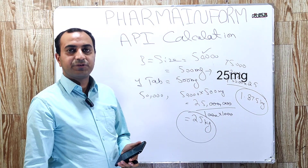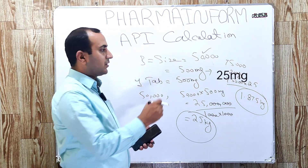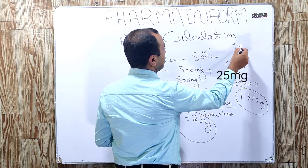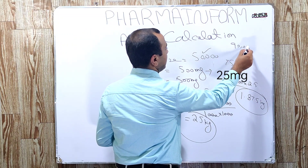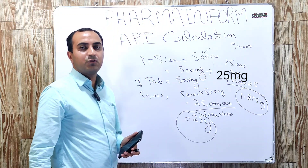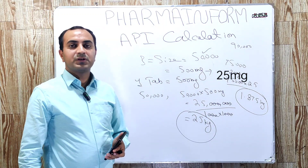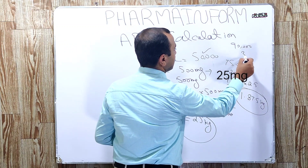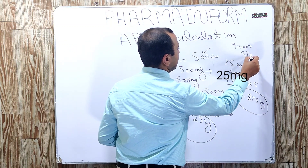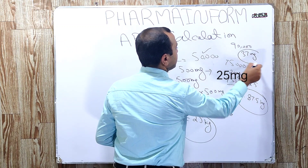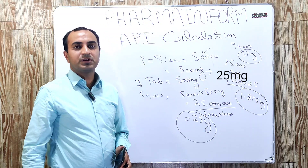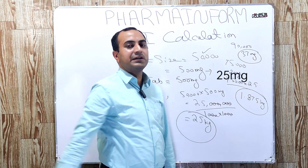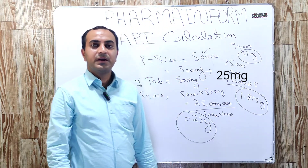Solve the question and give the answer in the comment box. If we want to prepare 90,000 tablets and the amount of active pharmaceutical ingredient in each tablet is 37 mg, how much quantity of active pharmaceutical ingredient will be required to manufacture 90,000 tablets?